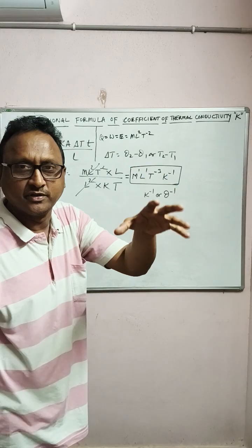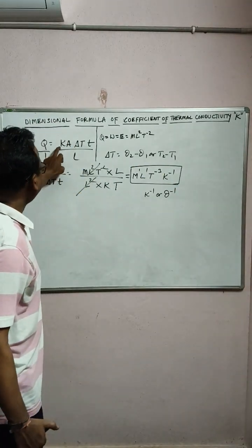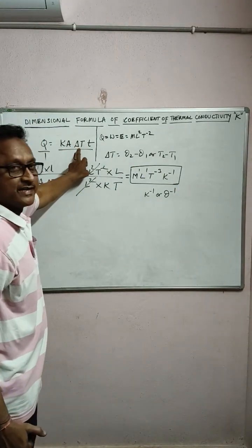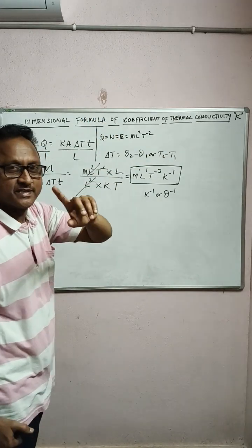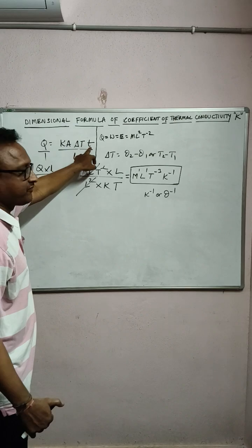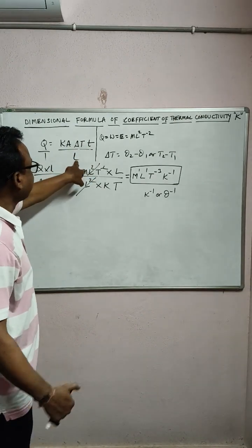that is quantity of heat going to the conductor or supplied, KA∆T, temperature difference (θ₂ - θ₁ or T₂ - T₁), which is represented as ∆T, over time T seconds, and L is the length of the conductor.